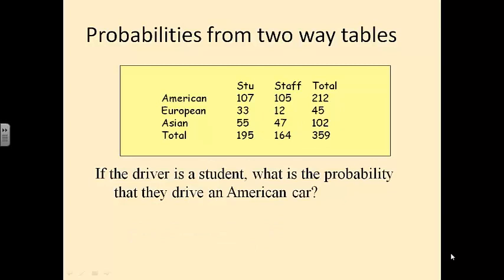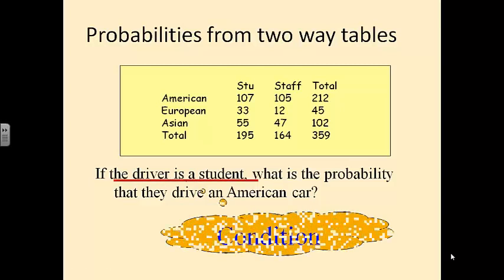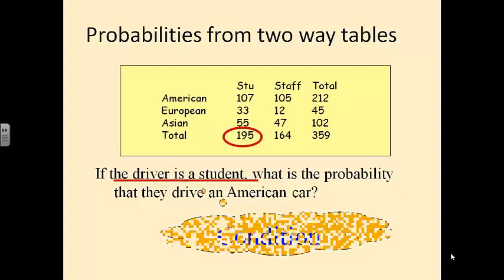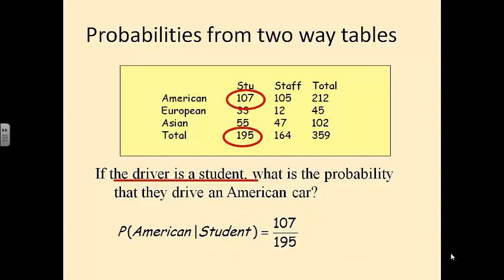If the driver is a student, what's the probability they drive an American car? This is a conditional. If the driver is a student, we know they're students — so we're only interested in 195 out of our table, not the whole 359. Of those, 107 students drive American cars, so 107 out of 195 is our answer.